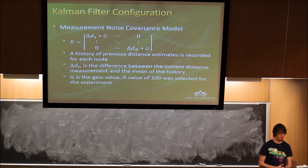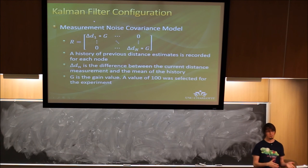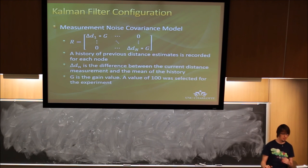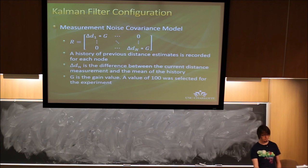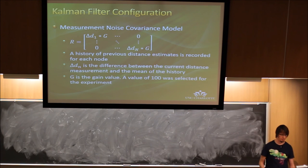For R, the measurement noise: we want to detect when we're in a high multipath fading area. This is done by keeping a brief history of measurements and applying a gain value. Whenever the robot moves into an area and the measurement suggests it's accelerated to a thousand miles an hour out of nowhere, we know that's not true. We take the difference between the current estimate and an averaged history, multiply that difference by a gain, and add it to R — artificially boosting the measurement noise. This causes the Kalman filter to not trust the measurement and instead rely on the prediction of where the node should be during the next iteration.